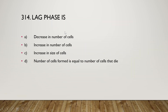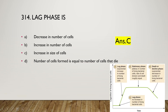The next question: the lag phase is characterized by decrease in number of cells, increase in number of cells, increase in size of cells, or number of cells formed equals number of cells that die. The right answer is option C — increase in size of cells. In the lag phase, there is no increase in the number of living bacterial cells.